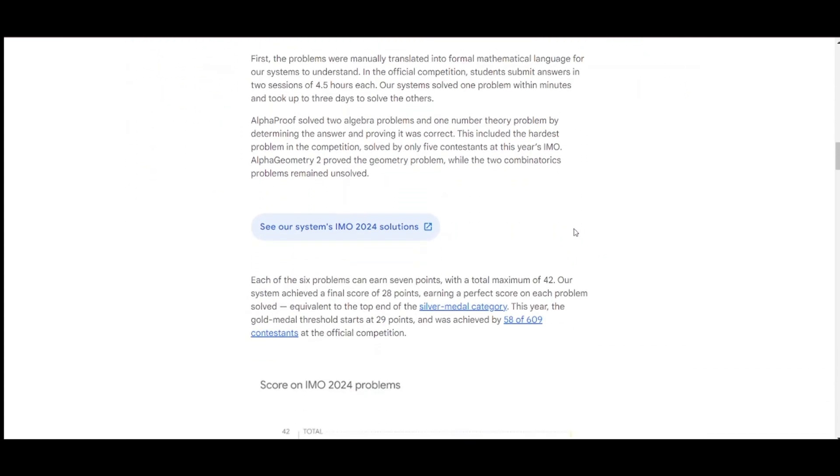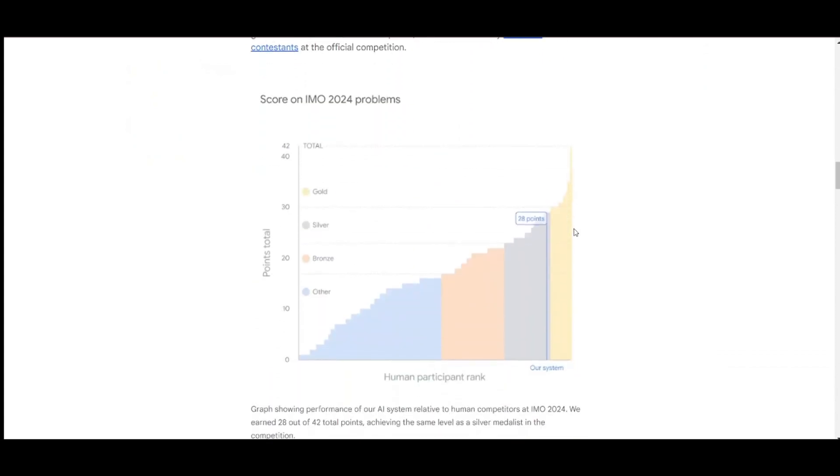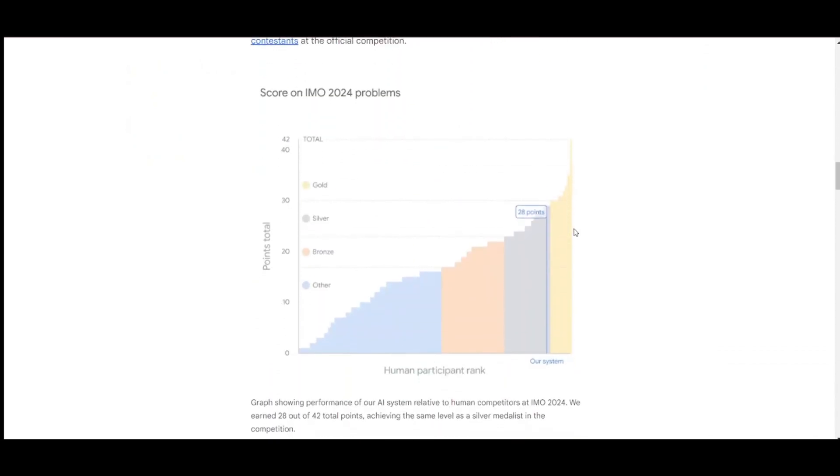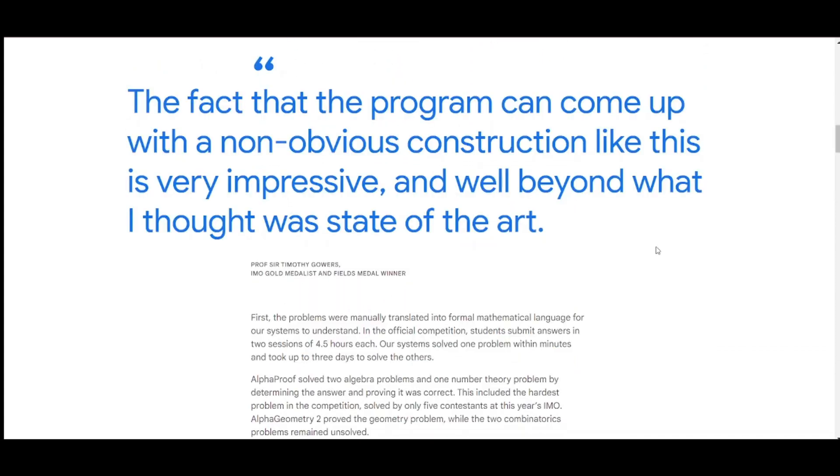This year, Google applied their combined AI system to the competition problems provided by the IMO organizers. Their solutions were scored according to the IMO's point-awarding rules by prominent mathematicians. First, the problems were manually translated into formal mathematical language for their systems to understand.